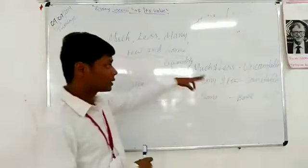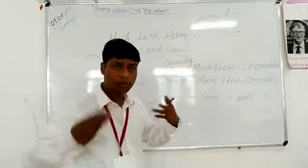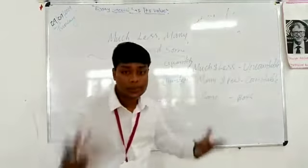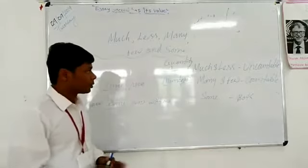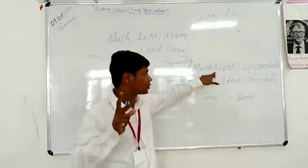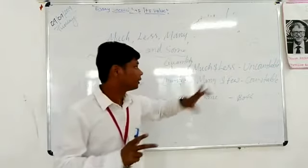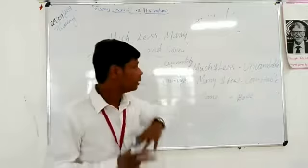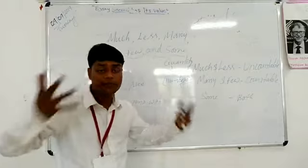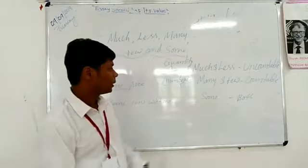Now let us discuss quantitative determiners. 'Much' and 'less' are used with uncountable nouns. These two quantifiers are used with uncountable nouns and with quantity — when speaking about the amount of something.